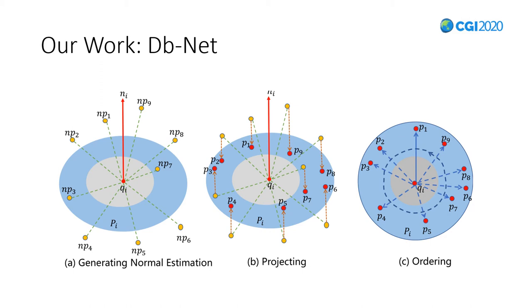B describes the process of projection. We project local points NPi using normal Ni of Qi on the normal plane of Qi.